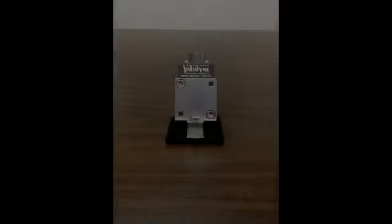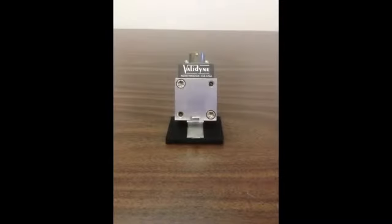Here is a typical DP15 variable reluctance pressure sensor. The first test we will perform is a continuity check on the internal sensor coils.